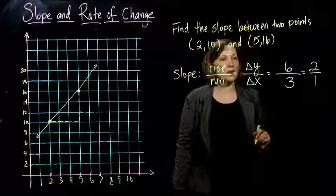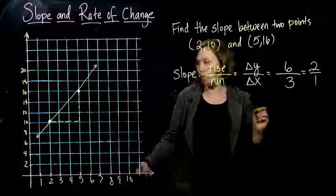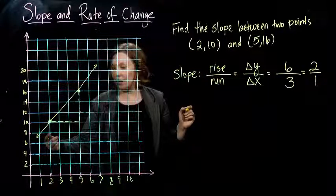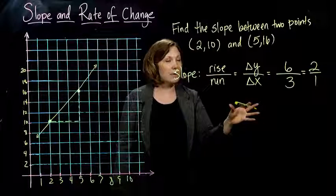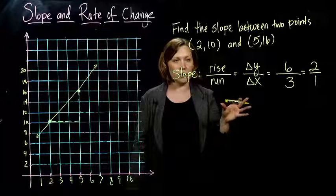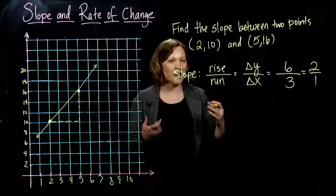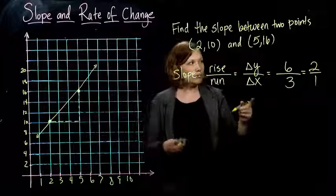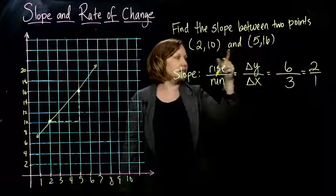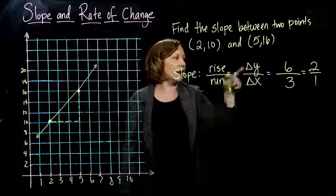And we went up, remember these are by twos. So we went up two, four, six. So we went up six. So we get, if we reduce this fraction, we can think of it as two over one. So for each one forward, I go two up. And that's how we would do it with the picture, which is what we've been doing.